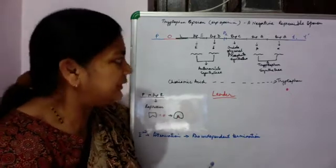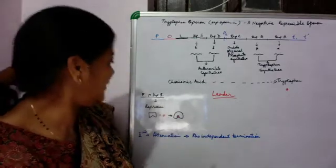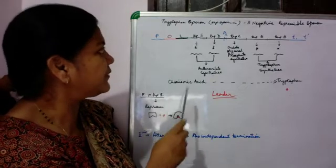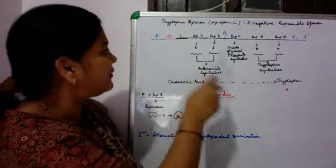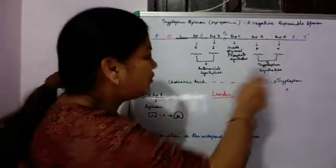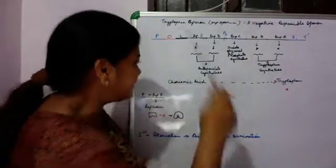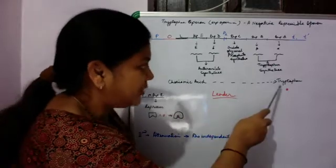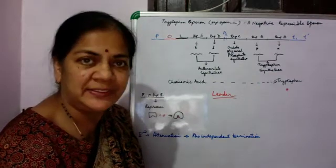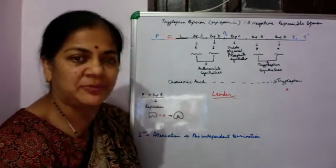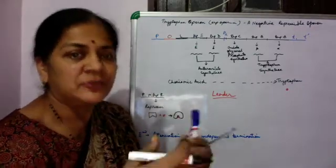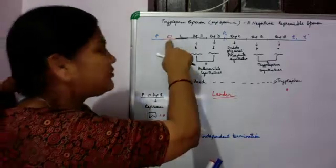The operon is regulated by another gene called trpR, which codes for a repressor. Normally, when the levels of tryptophan are low or when the cell needs tryptophan, the trp operon is on, the different genes are synthesized, and chorismic acid is converted into tryptophan. When tryptophan levels are sufficient and the cell doesn't need more, the trp operon is shut down — the repressor protein binds to the operator region.